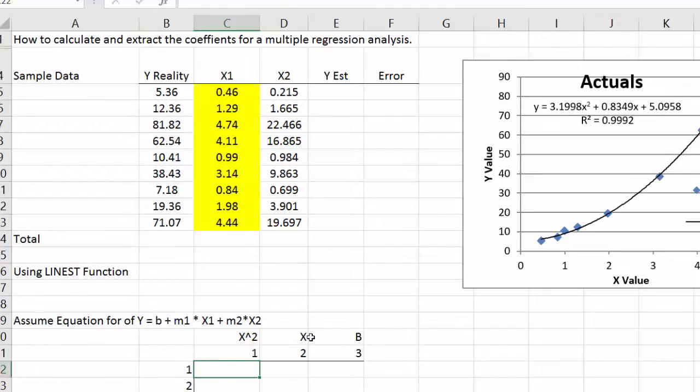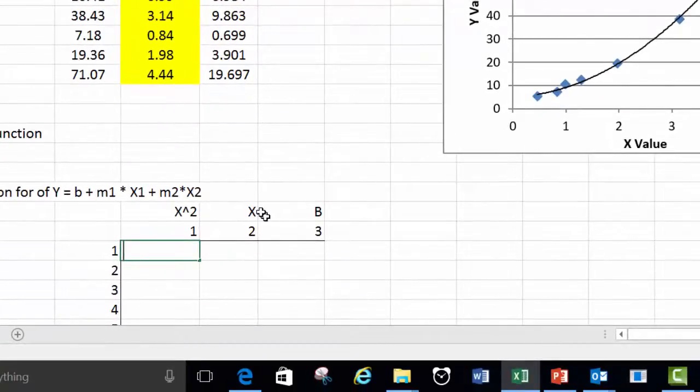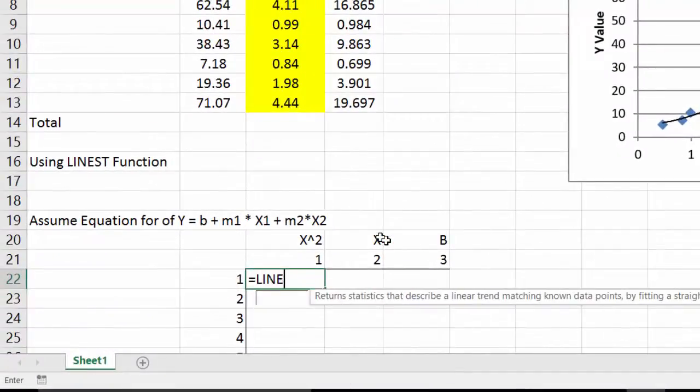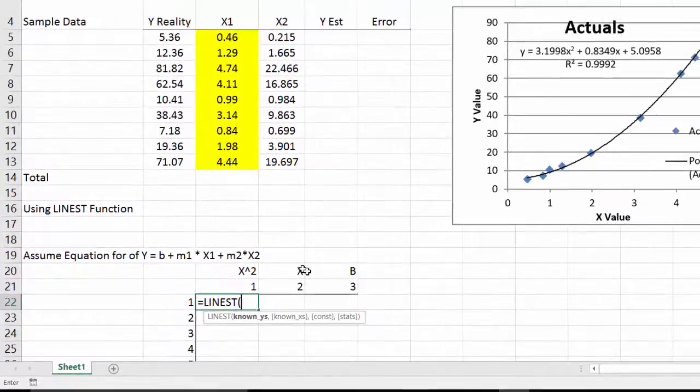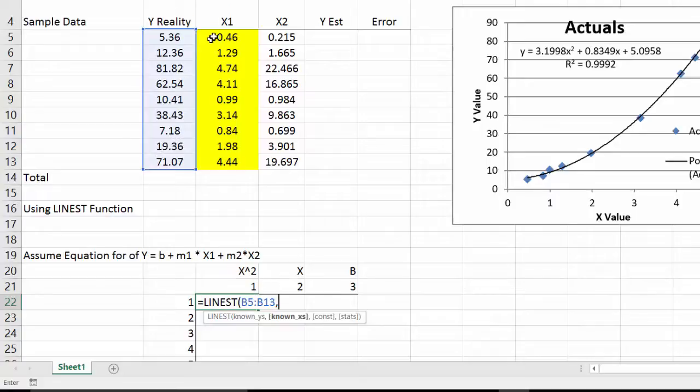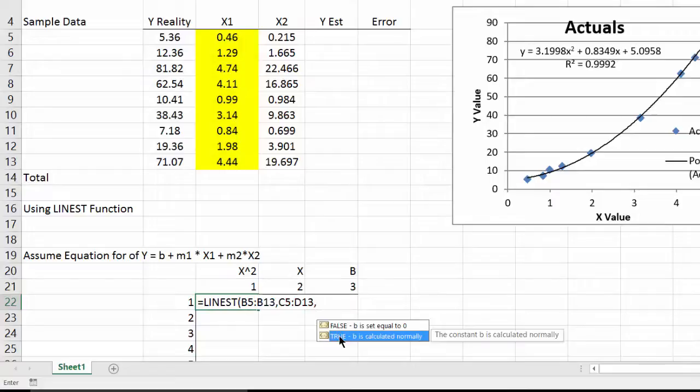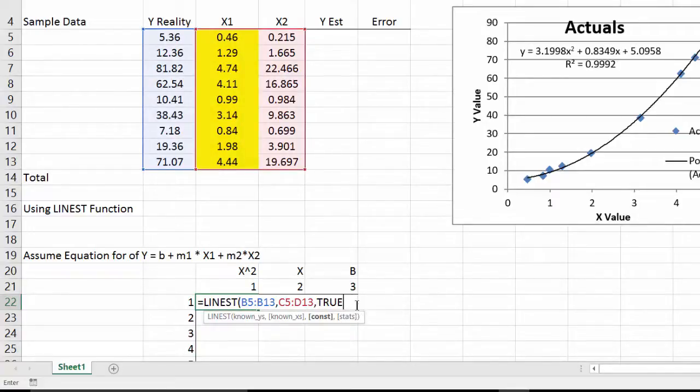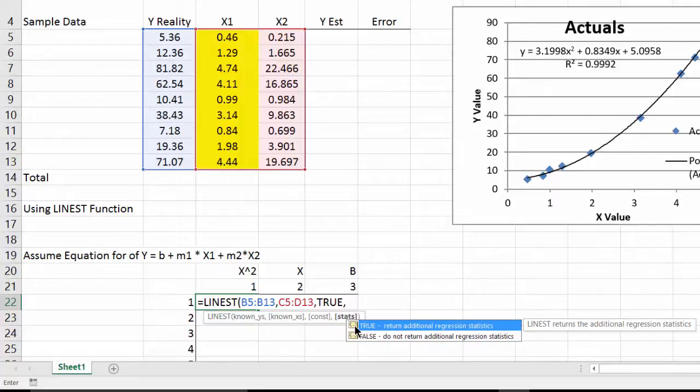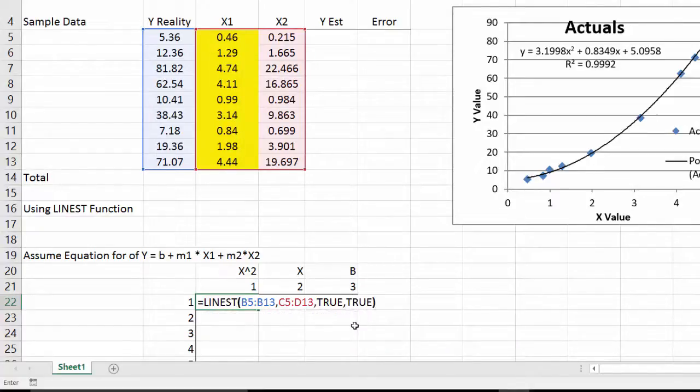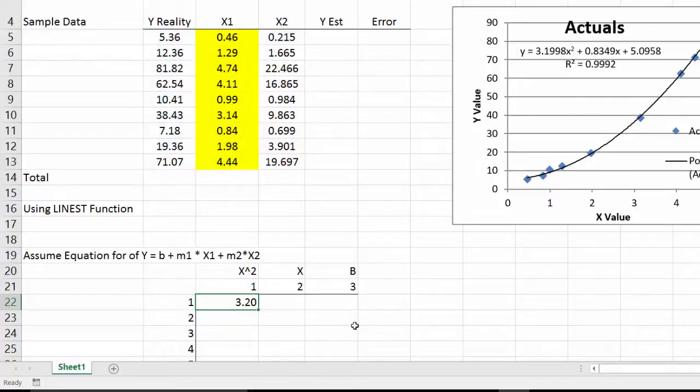We're going to start by just typing in the LINEST function. So we'll start by typing in equals LINEST parentheses. It wants the known Y's, then it wants the known X's. Now in this case we have two X's. So I'll highlight both of those. If we had multiple it could be any number. And then it wants the constant. So we want true. It's calculated normally. And stats. We do want the stats. So we'll return additional statistics. So this returned one value.